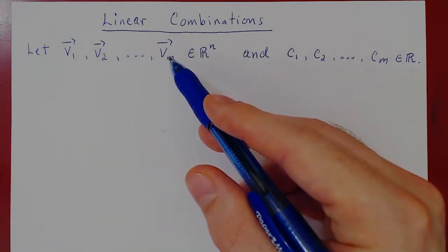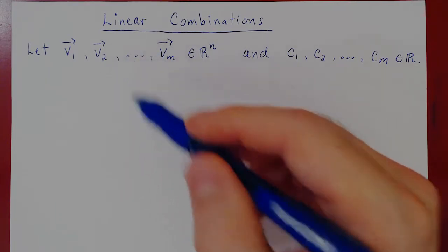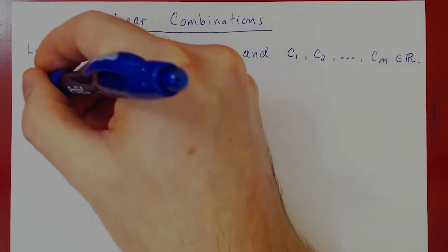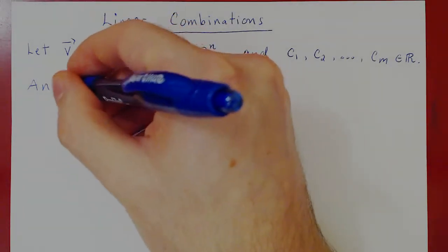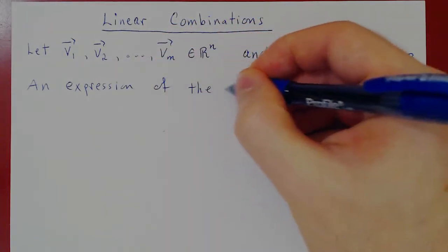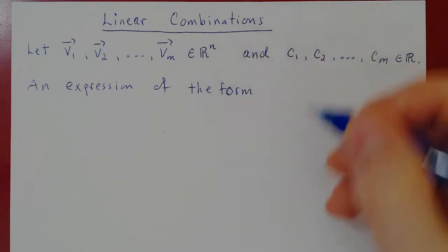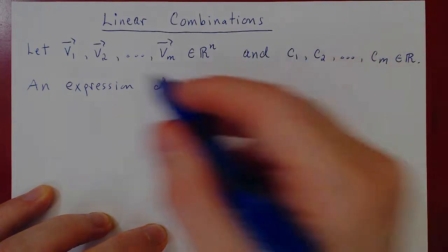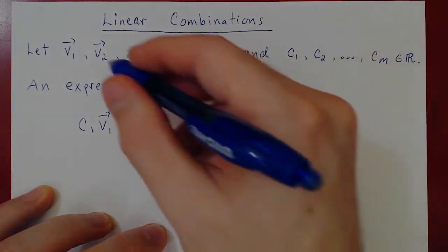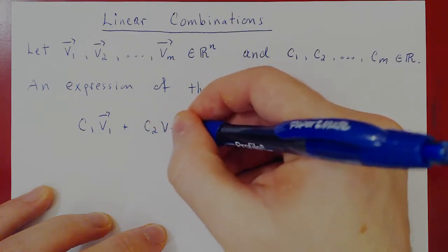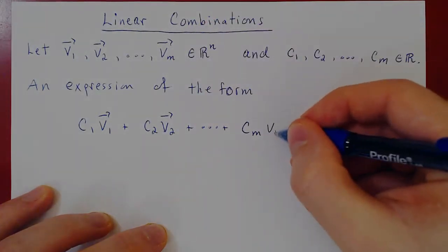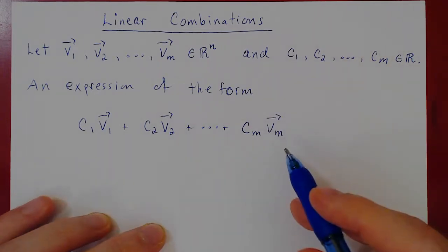So suppose you have m vectors v1 through vm in Rⁿ, therefore column matrices of length n, and take m real numbers c1 through cm. An expression of the form — some scalar multiple of v1, so c1 times v1, plus some multiple of v2, up to some multiple of the m-th vector vm — an expression of this form is called a linear combination.